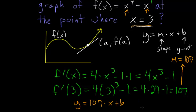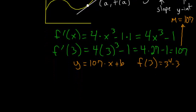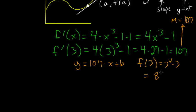into our function here. So f(3) = 3^4 - 3 and this evaluates to 81 - 3 or 78 so this would be our y value and if we plug in our x and y values then we can just solve for b.